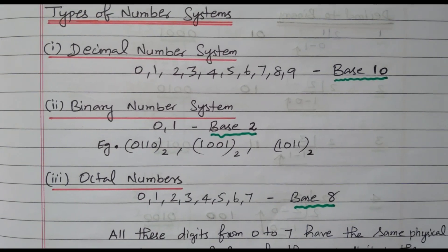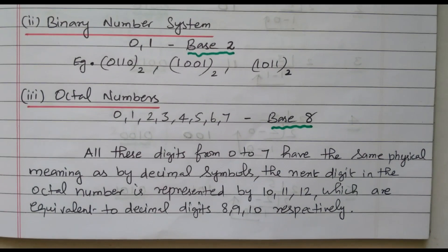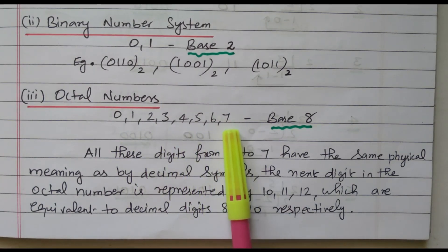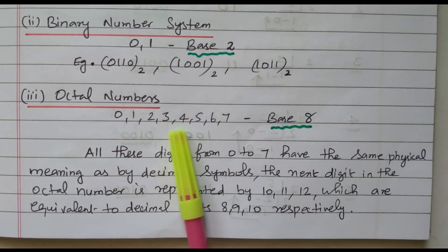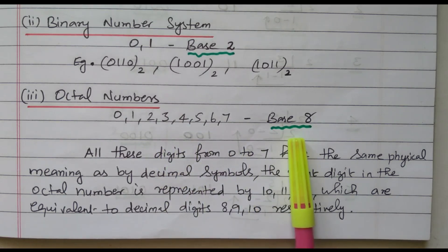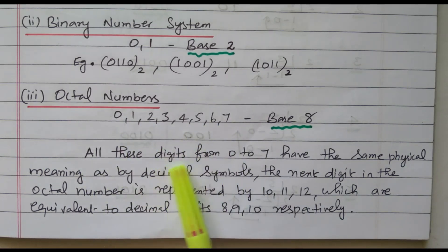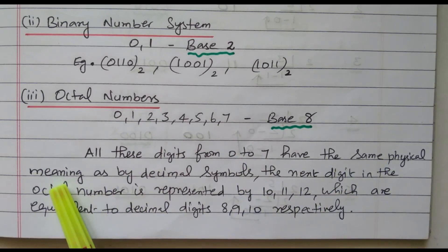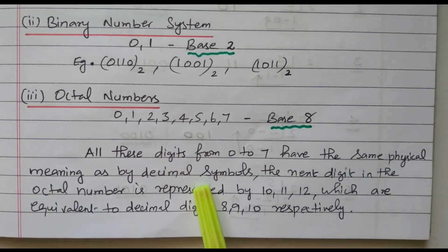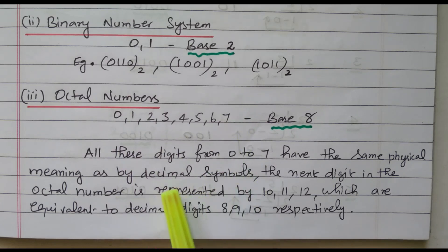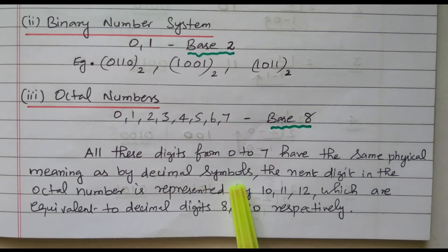The third one is the octal number system, having eight different numbers: 0, 1, 2, 3, 4, 5, 6, and 7. There is no 8 available, only up to 7. So there are eight different numbers, and the base is 8. All digits from 0 to 7 have the same physical meaning as in the decimal number system, but 8 and 9 are not available.